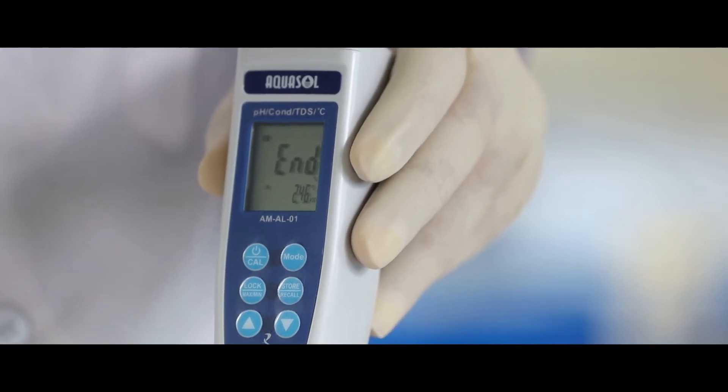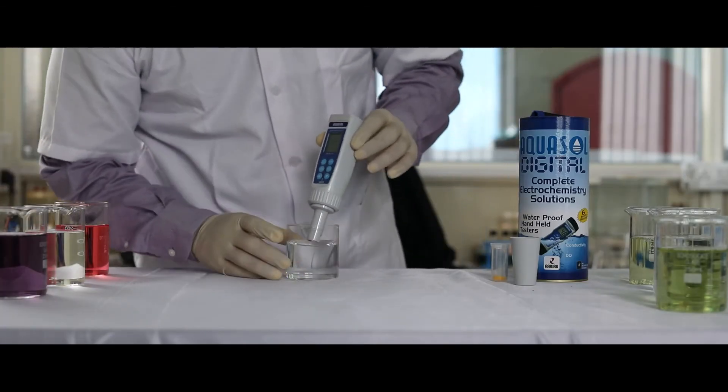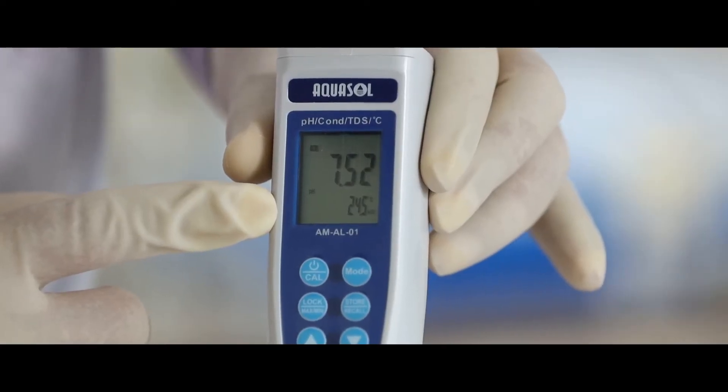Once the device is calibrated for pH, let's test the pH of the sample. Dip the electrode in the sample. Stir gently for a stable reading.